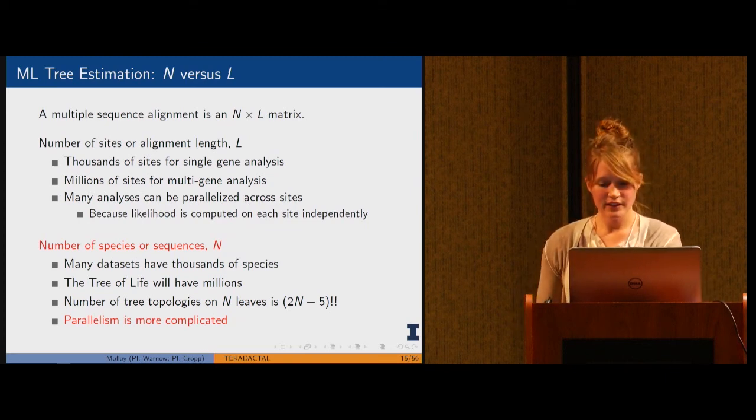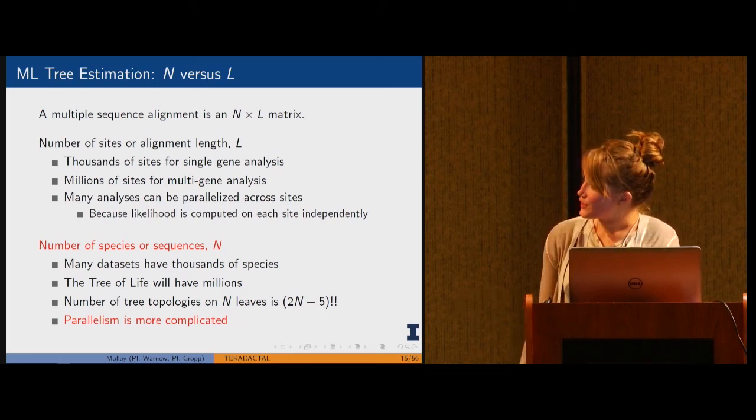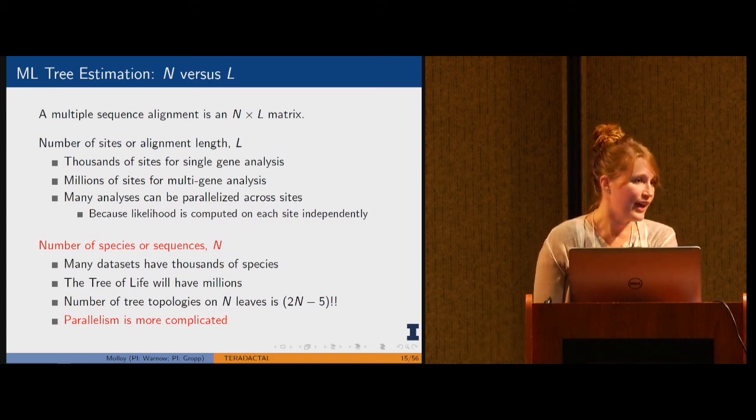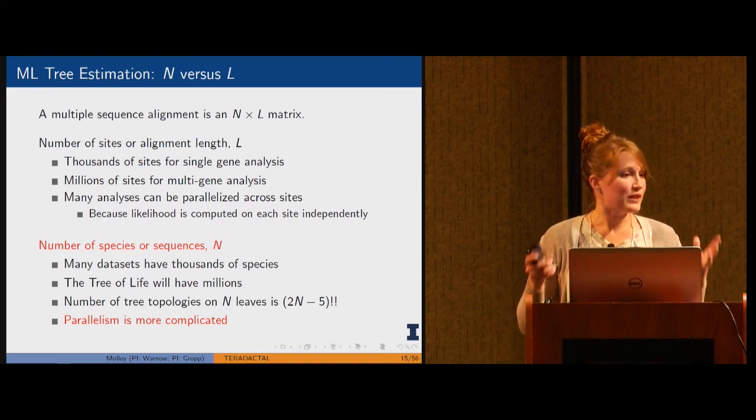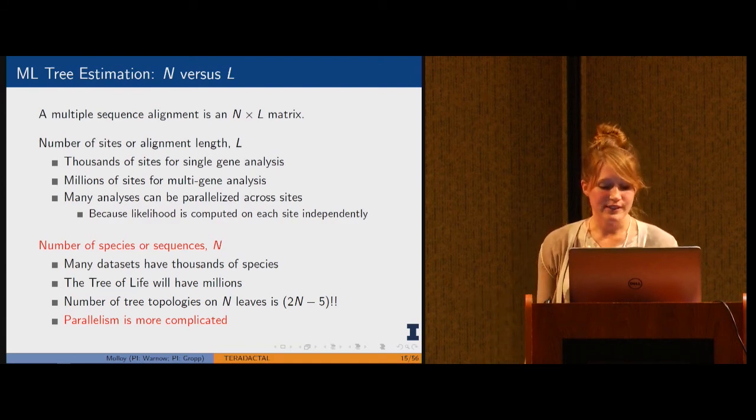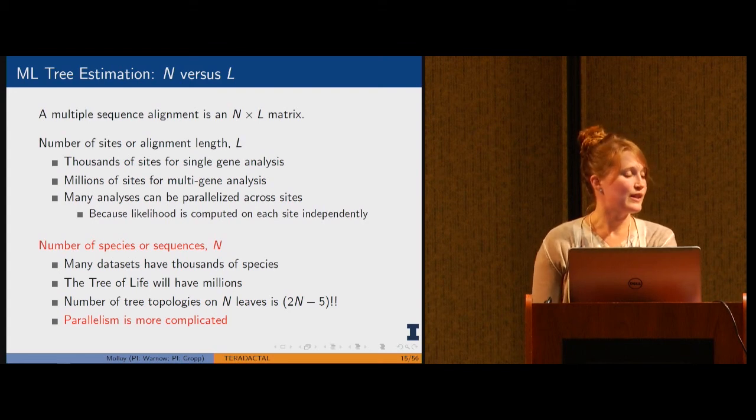Multiple sequence alignment data matrices have two dimensions, n and l. When we talk about l, this is not such a terrible dimension to be long because a likelihood is actually computed over the tree at each column in the alignment independently. You can divide your alignment into chunks along the l dimension and you have parallelism there. But if you have a very large number of sequences or species, then the parallelism gets more complicated.